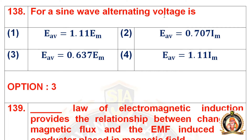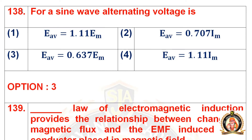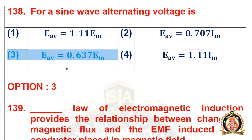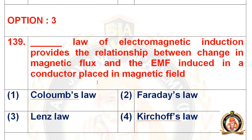Question 138: For a sine wave, the alternating average voltage is. Options are EAV = 1.11EM, EAV = 0.707·IM, EAV = 0.637·EM, and EAV = 1.11·IM. The right option is option number 3, that is EAV = 0.637 × EM, where EM is the maximum voltage.